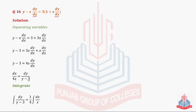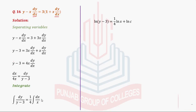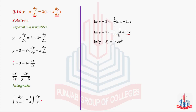Now dx left side par aaya, 4x divide ho jaega; dy — y minus 3 right side par aakar divide ho gaya. Variables separate ho gaye, integration apply ki. We have 1 over (y minus 3) dy is equal to 1/4 times 1 over x dx. 1 over (y minus 3) ka integral log of (y minus 3), aur 1 over x ka integral log of x, plus constant of integration in the form of log c. 1/4 — log ki value x ki power mein aa jaegi using property of log.